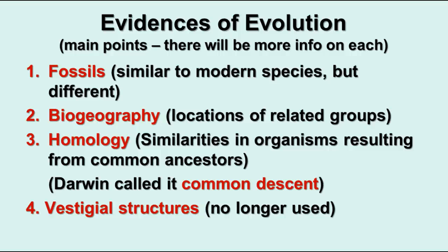We started talking about evolution and Darwin's theory. Now let's look at some of the evidence for evolution. These are the four main points of evidence. We'll give some more information on each one as we go along, and there will also be more information in class.